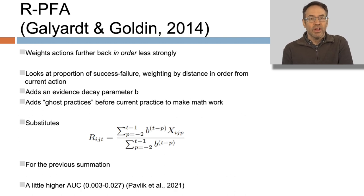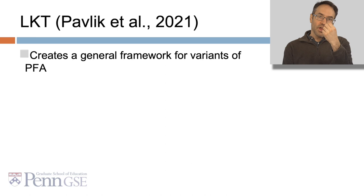Our next extension was RPFA by Galliart and Golden. RPFA also weights actions further back in order less strongly. What it does is it looks at the proportion of success and failure, weighting by the distance in order from the current action. It adds an evidence decay parameter B, and it adds what are called ghost practices before the current practices to make the math work. Again, doesn't get that big a difference over original PFA.